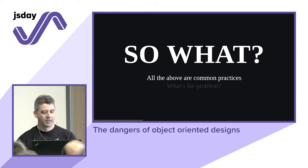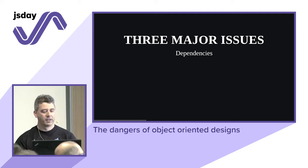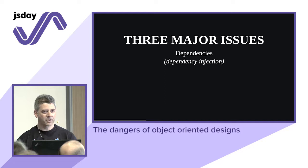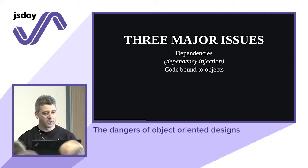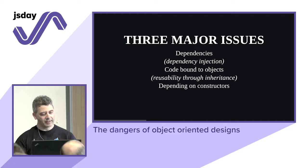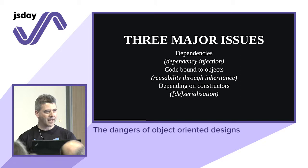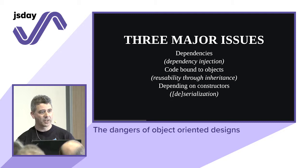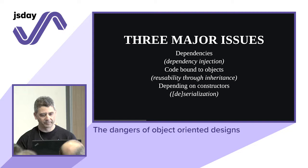There are three major issues. First: dependencies — the symptom is needing dependency injection frameworks and mocking everywhere. Second: code is bound to objects — in principle you'd have reusability through inheritance. Third: depending on constructors — every time you create something you invoke a constructor, which leads to needing serialization and deserialization frameworks, since state inside an object needs the object while state outside is just a value.